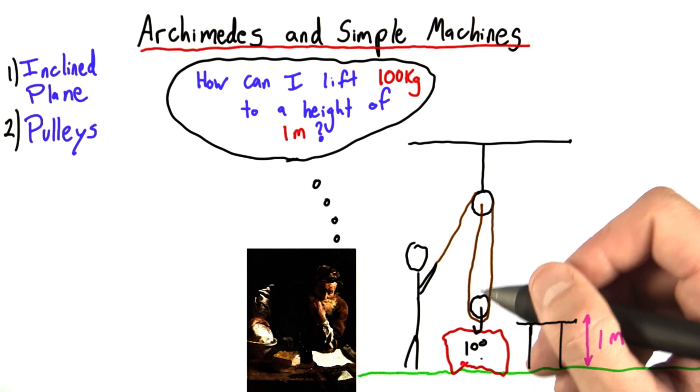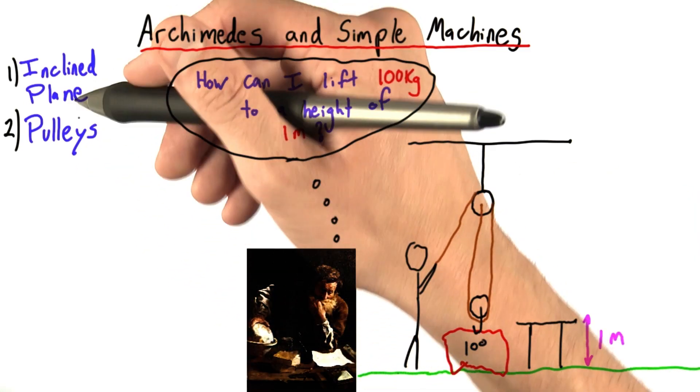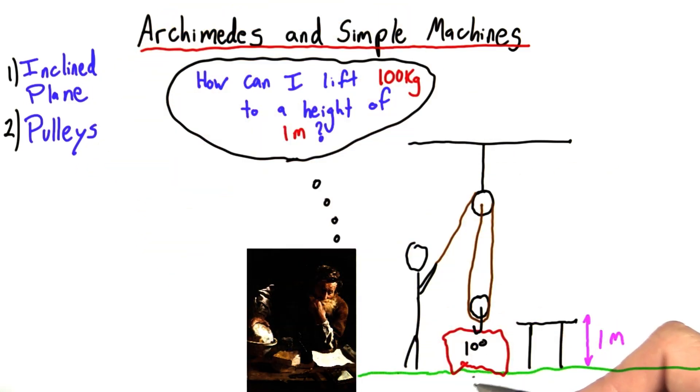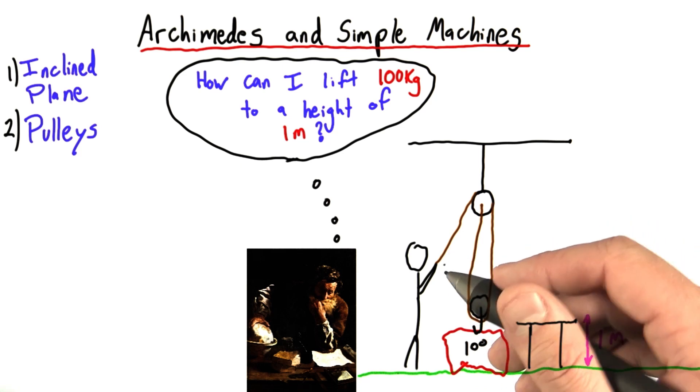Another option is to use a system of pulleys. Pulleys actually have the same tradeoff that incline planes do. We may not have to pull quite as hard, but we'll have to pull over a greater distance.